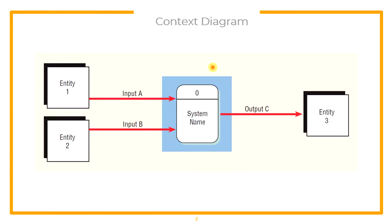In a Context Diagram, we're going to use only one process, and inside that process we're going to name it as the system name — or whatever the name of your system is — then 0. We're also going to put the entities needed so that we can get the sources and sinks of our data. There should be at least one input and at least one output from our system.